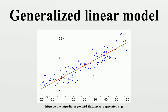Such a model is a log odds model. Generalized linear models cover all these situations by allowing for response variables that have arbitrary distributions, and for an arbitrary function of the response variable to vary linearly with the predicted values. For example, the case of predicted number of beach attendees would typically be modeled with a Poisson distribution and a log link, while the case of predicted probability of beach attendance would typically be modeled with a Bernoulli distribution and a log odds link function.